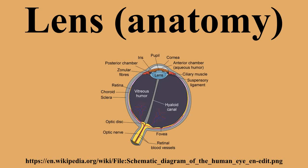The lens is a transparent biconvex structure in the eye that, along with the cornea, helps to refract light to be focused on the retina. The lens, by changing shape, functions to change the focal distance of the eye so that it can focus on objects at various distances, thus allowing a sharp real image of the object of interest to be formed on the retina.